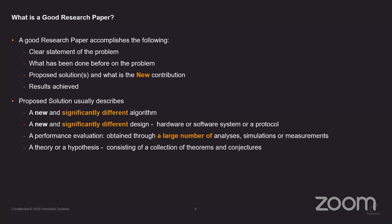When you say you have a new contribution, what does that really mean? In computer science, it could be a new algorithm significantly different from what others have done — not just gaining one or two parameters. It could be a new hardware or software design, or a protocol that is a more practical, pragmatic way of doing things. It could also be something that is not entirely new but offers something valuable.